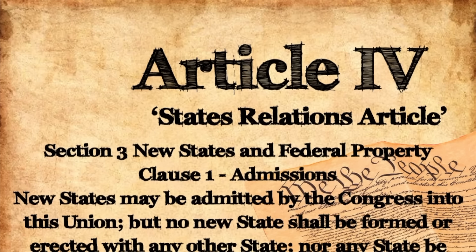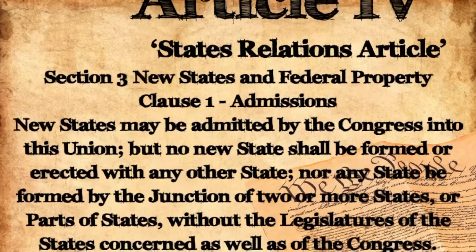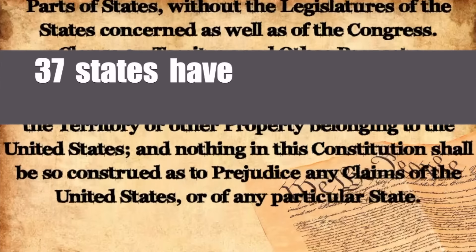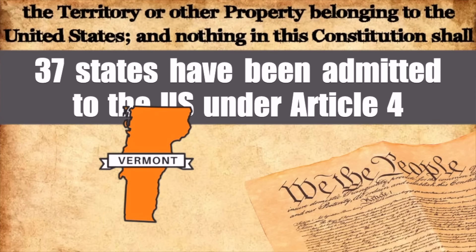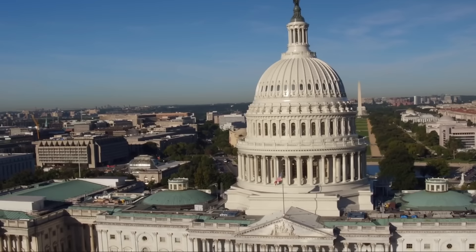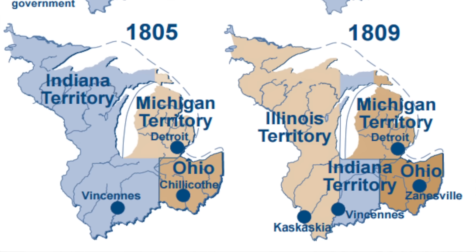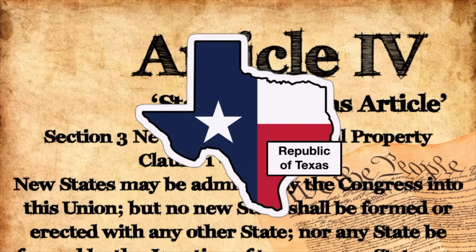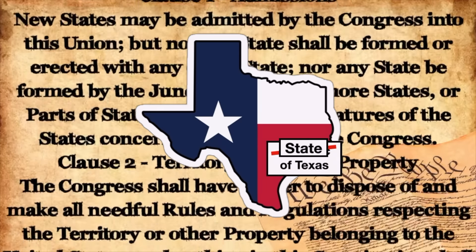Section 3 covers new states and territories. It outlines the process for admitting new states into the Union and governs the creation of new states from existing ones. 37 states have been admitted to the U.S. under Article 4 — Vermont was the first in 1791, and Hawaii the most recent in 1959. Most states were first organized by Congress as federal territories before being admitted as states, but Article 4 doesn't require this. Take Texas, for example, which was an independent republic before it was annexed by the U.S. and admitted as a state in 1845.